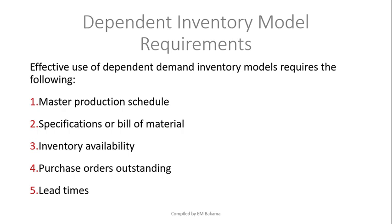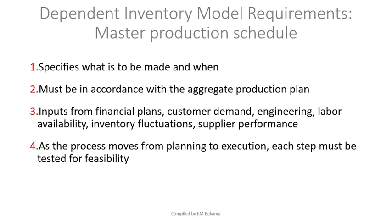For MRP to work properly, a company needs five key inputs: the Master Production Schedule, the Bill of Material (specifications), inventory availability, outstanding purchase orders, and lead times. The ones most relevant to calculation are the Master Production Schedule, the Bill of Material, and lead time. Let's look at each of these, starting with the Master Production Schedule, or MPS.